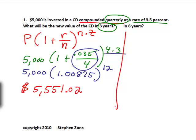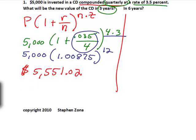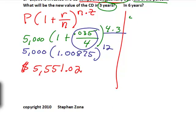Now let's look at that same problem, but we're going to change it because the next part of the question asks in six years, what will everything be worth? We still have the $5,000, one plus 0.035 over four. But now we've got same quarterly, but now we've got six years. So we're going to multiply it by six instead of three.